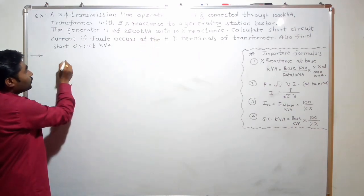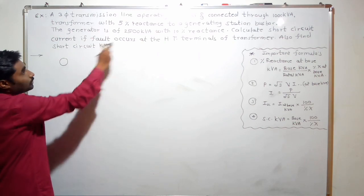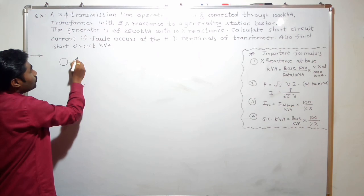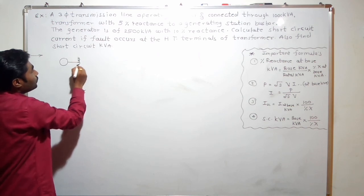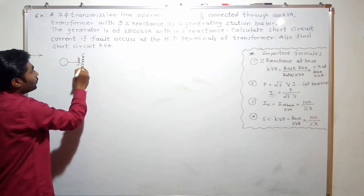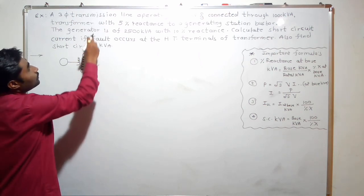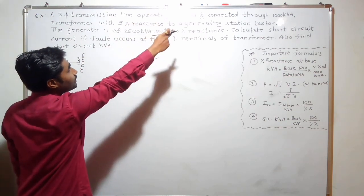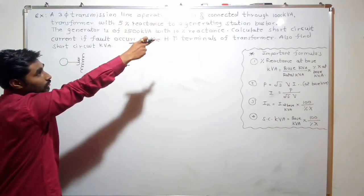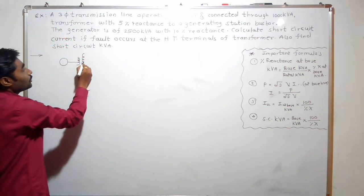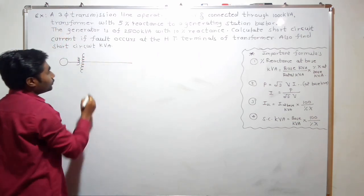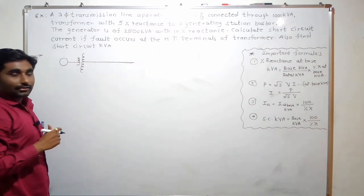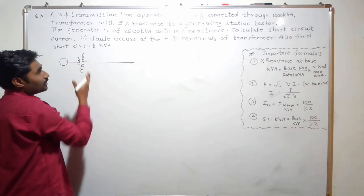Here is one generator, and this generator is connected to a transformer. This is a 1000 kVA transformer, and this is a transmission line which is connected to the transformer. So this is our diagram.